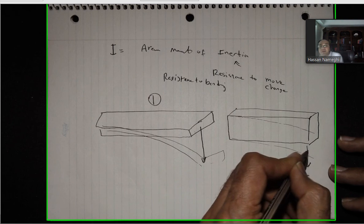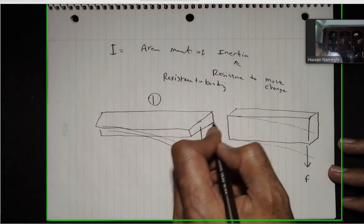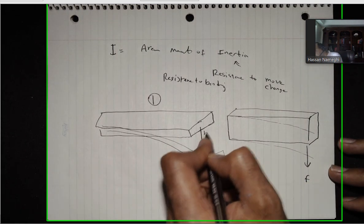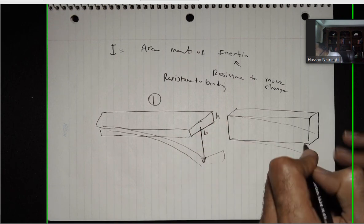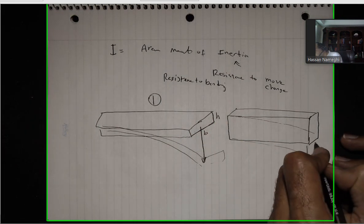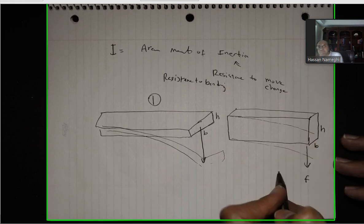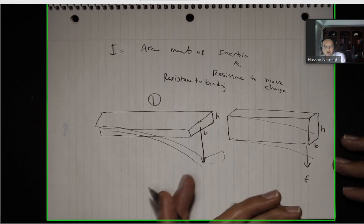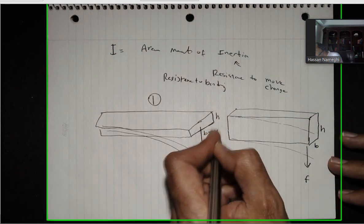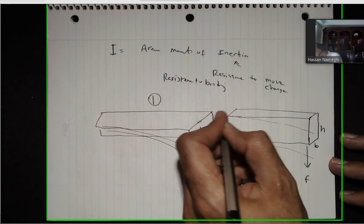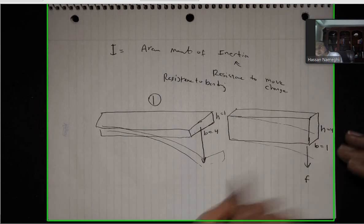But what's happening? This is the same ruler. In this case, the base is the largest size and the height is the smaller size. And then if I go this way, the base is this way and the height is this way. Let's work numerically: if the base here is equal to 4, the height is 1. Down here, base is 1 and the height is 4.